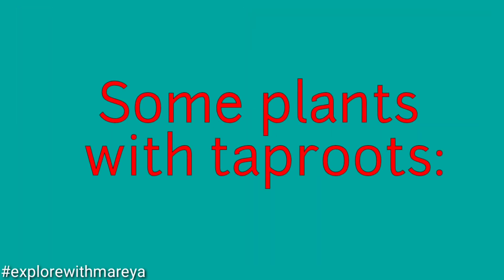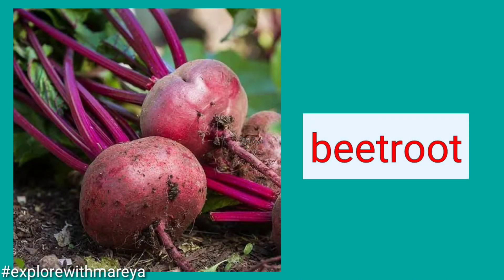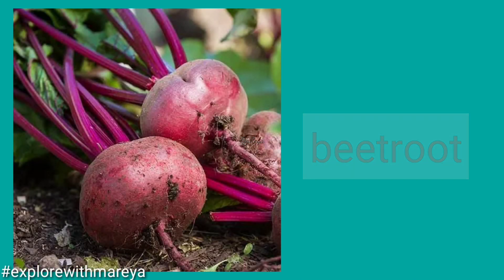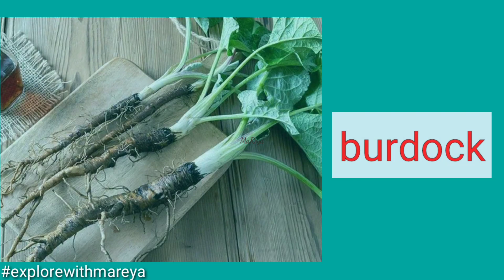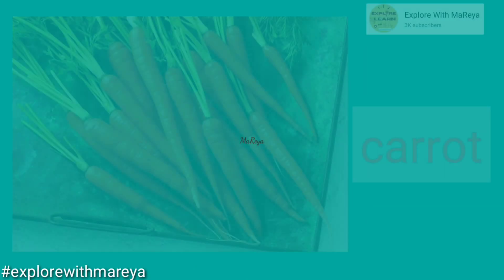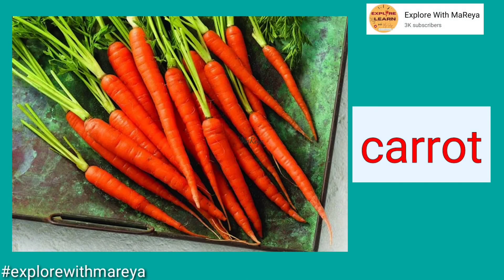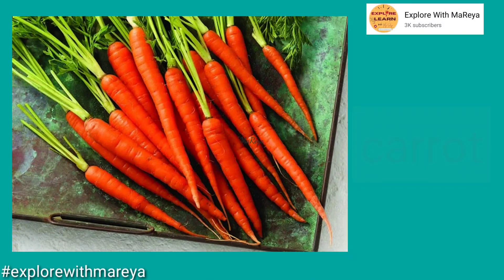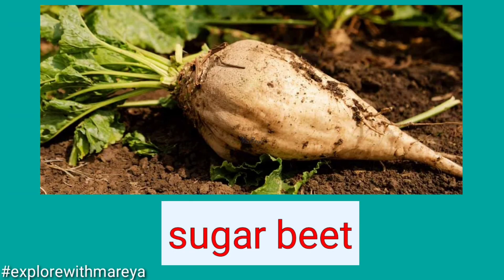Some of the plants with taproots. Number one, the beetroot. This is a taproot — a burdock. And also a carrot, as well as sugar beet.